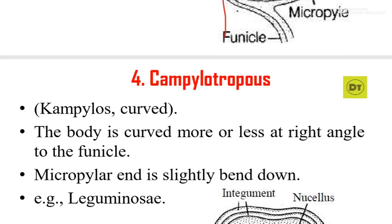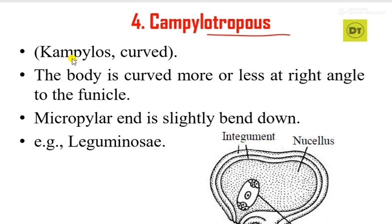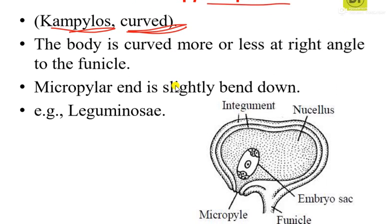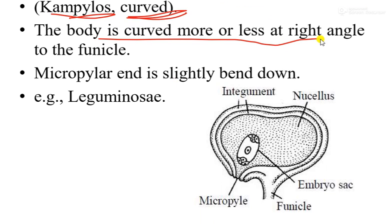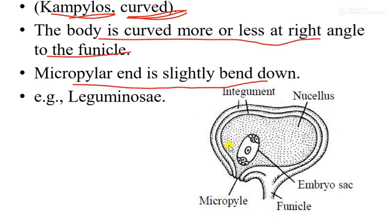The fourth type of ovule is known as campylotropous. The term 'campylos' means curved. Here, the body is curved more or less at a right angle to the funicle — not exactly 90 degrees, but approximately so. The micropylar end is slightly bent downwards. This type is commonly found in Leguminosae.